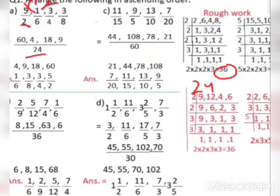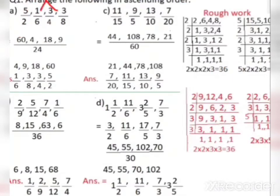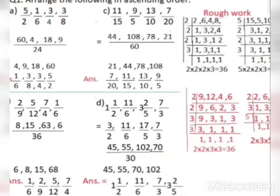For 1/6: 6×4=24, so multiply numerator 1 by 4: 1×4=4. So 1/6 becomes 4/24. You can do this directly. For 3/4: 4×6=24, multiply numerator 3 by 6: 3×6=18. So 3/4 becomes 18/24. For 3/8: 8×3=24, multiply numerator 3 by 3: 3×3=9. So 3/8 becomes 9/24. The denominator is the same (24) for all, so we write it once. The numerator is multiplied by the same factor used for the denominator.